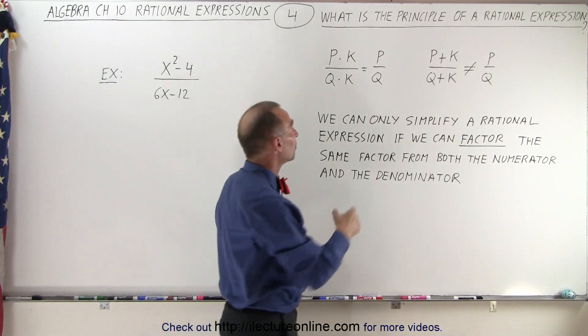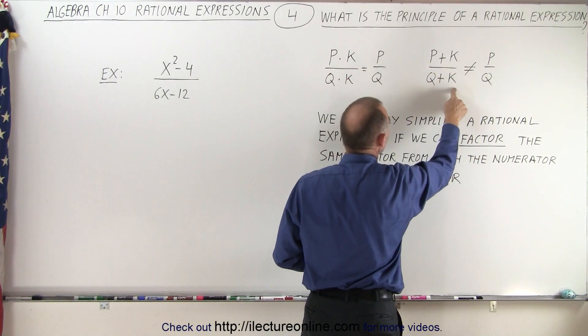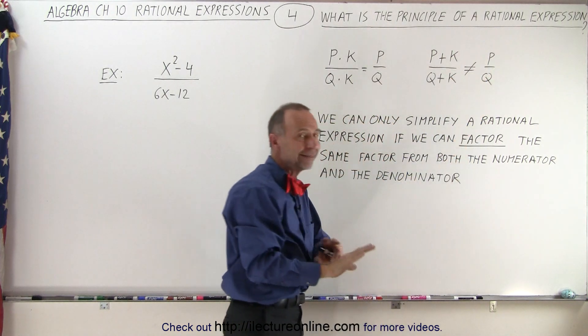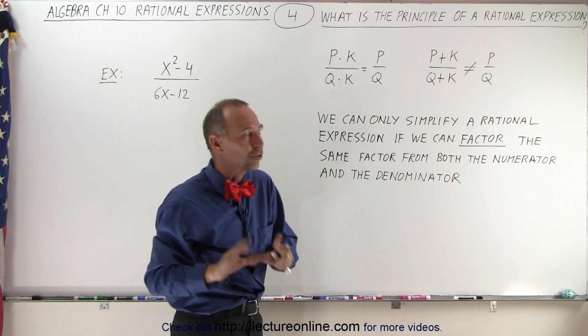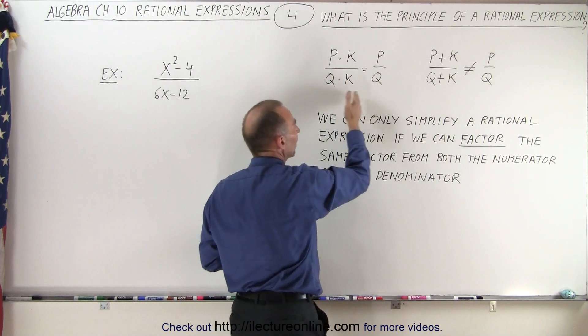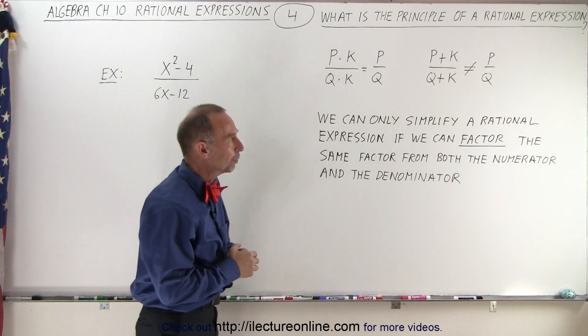But if instead of multiplying we have P plus K and Q plus K, we cannot simplify by getting rid of the K's and write as P over Q. That is not the same. That's the essential difference between having factors and when we have things added to the original expression in the numerator and denominator.